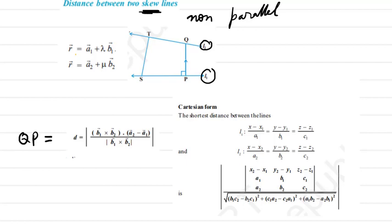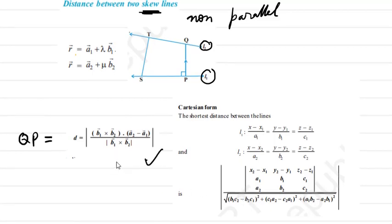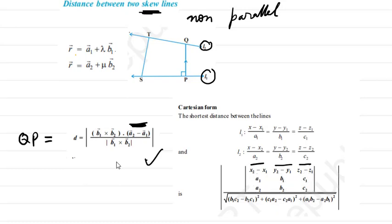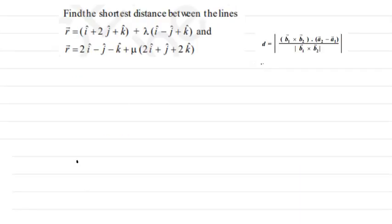There is a Cartesian form also for this distance, but it looks very large. The vector form is easy to remember and is essentially the scalar equivalent. When finding a2 − a1, you get x2−x1, y2−y1, z2−z1 as the first row. The second row comes from b1 with coefficients a1, b1, c1, and the third row from b2 with coefficients a2, b2, c2, all divided by the magnitude of b1 × b2.